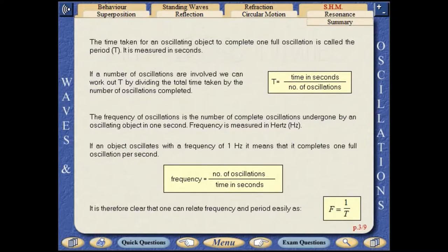The time taken for an oscillating object to complete one full oscillation is called the period. It is measured in seconds.